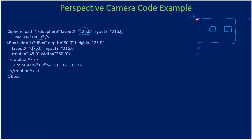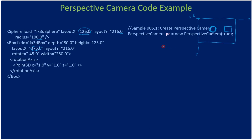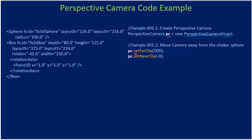When we talk about the perspective camera, it's good to know where the actual objects are. Previously we created a parallel camera; here the constructor is PerspectiveCamera and we pass a boolean value of true. We name the camera 'pc' and then set the far clip as well as the near clip.